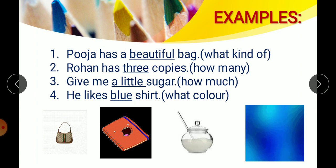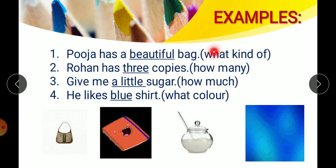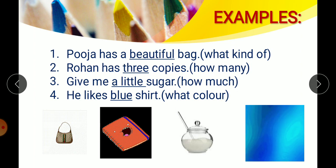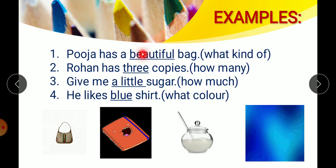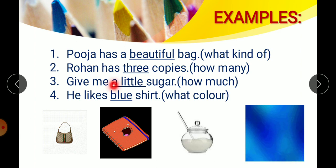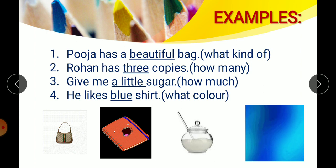So, any word that describes a noun or a pronoun and tells about what kind of, how many, how much, or the color of a person, place or a thing — that is known as an adjective. You will see that immediately after the adjective, there is a noun: 'bag', 'copies', 'sugar', 'shirt'. All the describing words are adjectives.